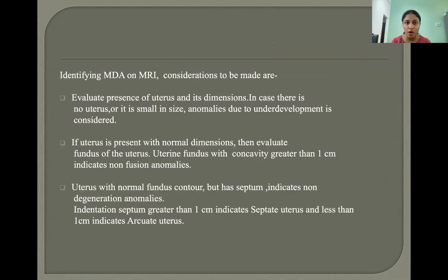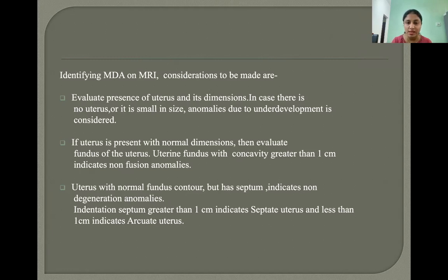To identify a Mullerian duct anomaly on MRI, the key considerations are: first, evaluate the presence of the uterus and its dimensions — if absent or small, underdevelopment anomalies are considered. If present with normal dimensions, evaluate the fundal contour. A fundal concavity greater than 1 cm indicates non-fusion anomalies. A normal fundal contour with a septum indicates non-resorption anomalies. An indentation septum greater than 1 cm indicates septate uterus, and less than 1 cm indicates arcuate uterus.